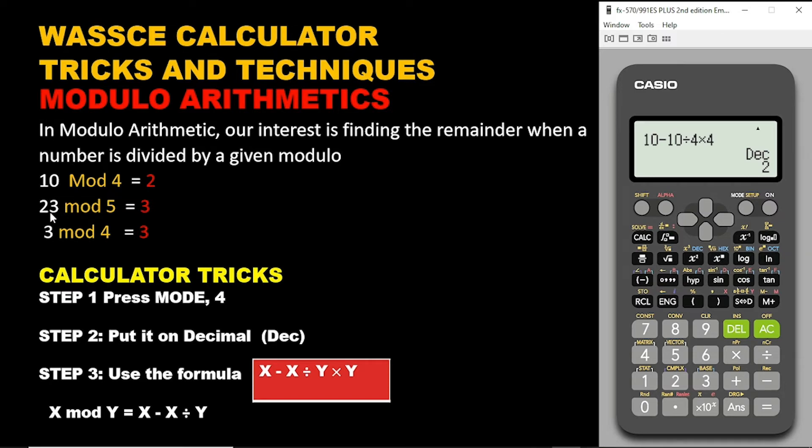Let's do the other example, 23 mod 5. Let's see what we get when 5 divides 23. So remember, the x is 23 and then the y is 5. So we are having 23 minus 23, then we divide by y, and the y is 5, so that is 5 times 5. Bam, we are there. So that is 3.